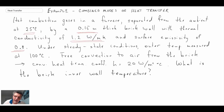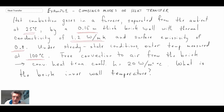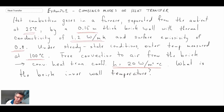Under steady state conditions, the outer temperature of the brick wall is measured to be 100 degrees C. We have free convection on the outside — that is convection without any pumping source, just due to the buoyancy of the air — with a convective heat transfer coefficient of 20 watts per meter squared degrees C. We're then asked to determine the inner wall temperature of the furnace on the inside of the brick wall.